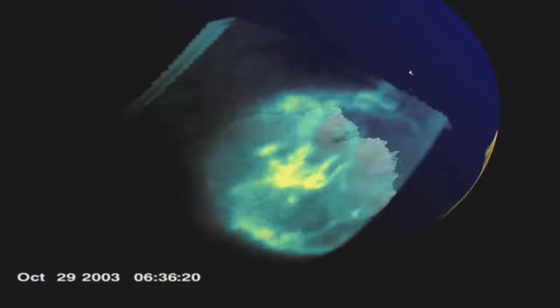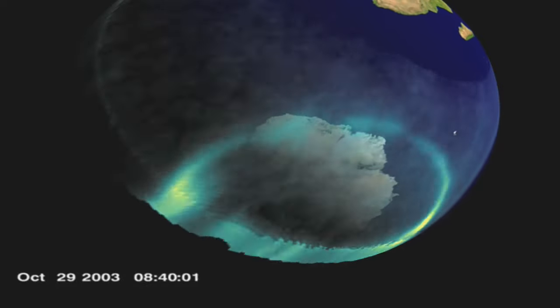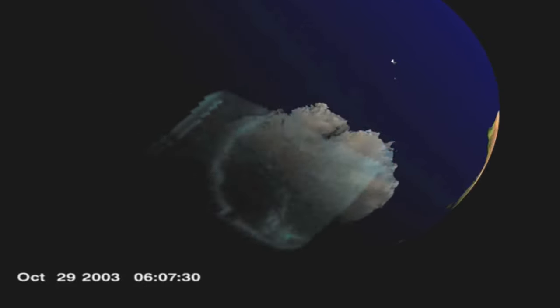From space, the auroras are even more breathtaking. Take a look at the Southern Lights in action over Antarctica. These pictures were taken by one of NASA's satellites. Pretty cool.